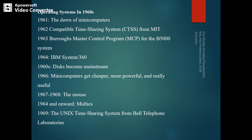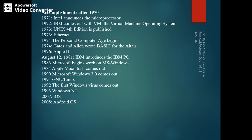Multics was introduced in 1964 and the Unix system was introduced in 1969. The Linux system was developed in 1991. Windows NT came out around 1993. The Android OS was developed in 2008.